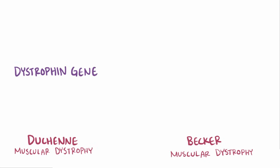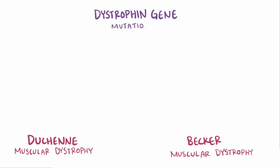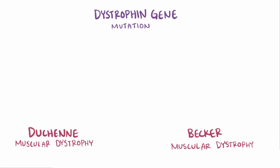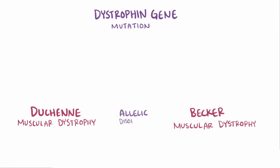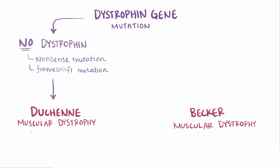Both Duchenne and Becker muscular dystrophy result from mutations in the same dystrophin gene, making them allelic disorders. When a mutation is severe enough to result in no protein at all — for example, a nonsense or frameshift mutation — the result is Duchenne muscular dystrophy, which is the more severe of the two, with symptoms usually presenting by age 5.